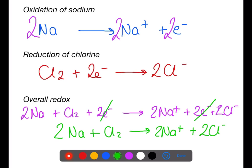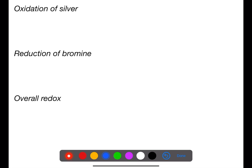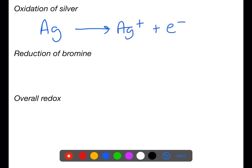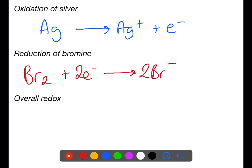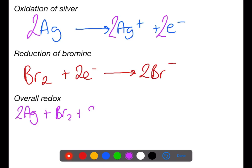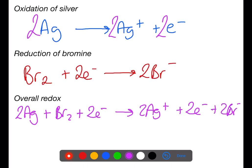The oxidation of silver to silver ions involves the loss of one electron: Ag becomes Ag⁺ plus an electron. Bromine is reduced to bromide ions by the gain of an electron to the outer shell of each atom. Bromine exists as a diatomic molecule like chlorine, so two electrons are required to form two bromide ions. To combine the equations, the oxidation equation needs to be multiplied by two. We then combine everything on the left and right, cancel the electrons, and rewrite the overall redox equation.